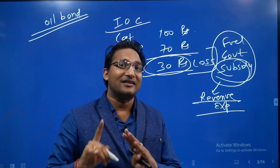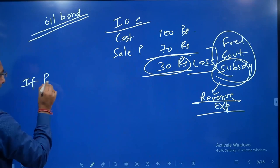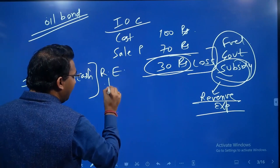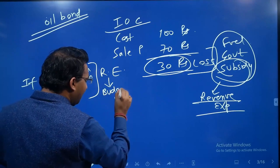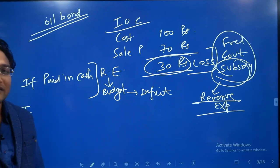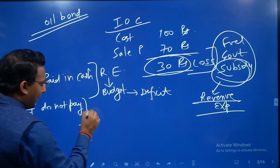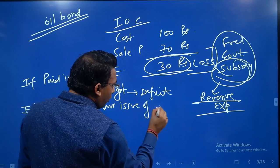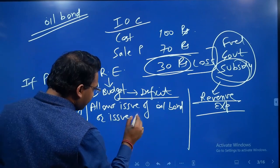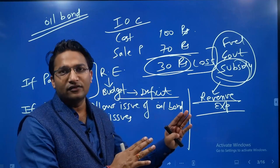This subsidy is basically revenue expenditure as far as the budget is concerned, because it does not impact the creation of assets. If this subsidy is paid in cash, it becomes part of the revenue expenditure and is included in the budget — reflected in both the revenue deficit and the fiscal deficit. But in some years, if the government does not have sufficient resources and does not pay in cash, it allows the oil marketing companies to issue oil bonds, or the government itself issues oil bonds to pay the IOC.